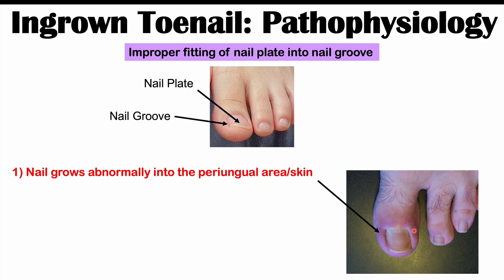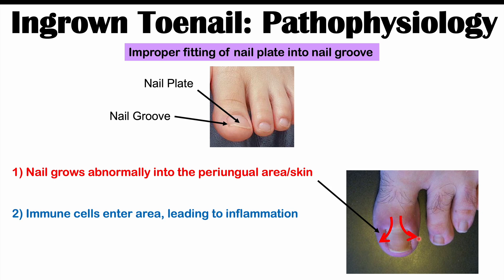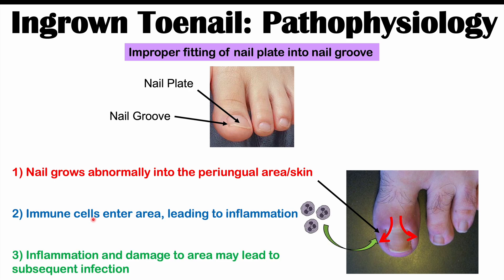If we look at the sides of the nail, the nail starts to grow into the sides of the toe — into the periungual area — with sharp pieces or spicules of nail growing into those areas of skin. Those sharp spicules lead to an immune reaction, and immune cells enter the area causing inflammation. That inflammation and tissue damage may then lead to subsequent bacterial or fungal infections.